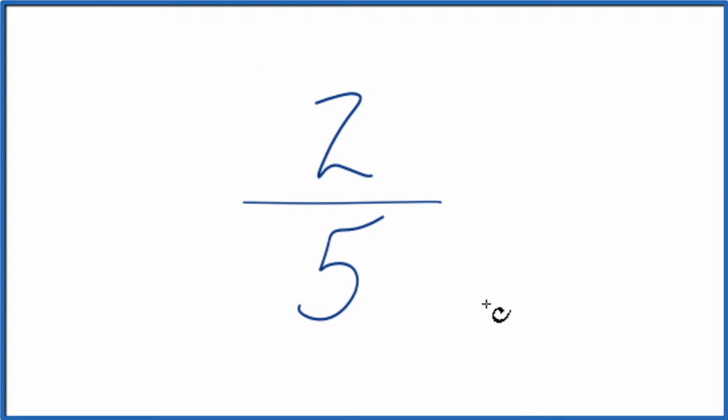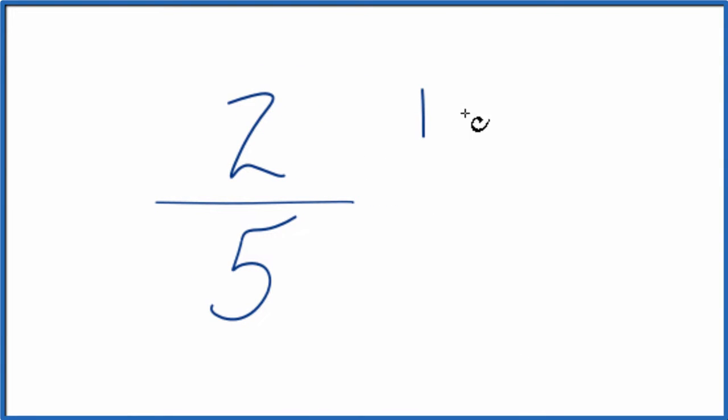If you think about it, the factors of 2 are 1 times 2, and 5, 1 times 5. So the only common factor is the 1 there.